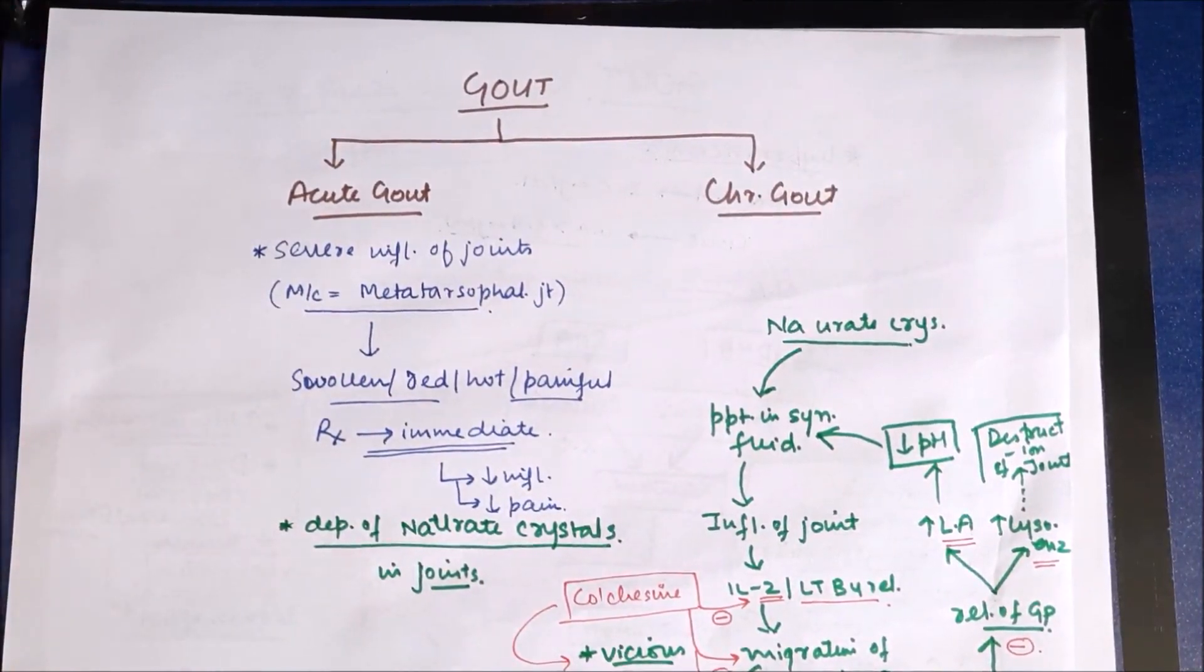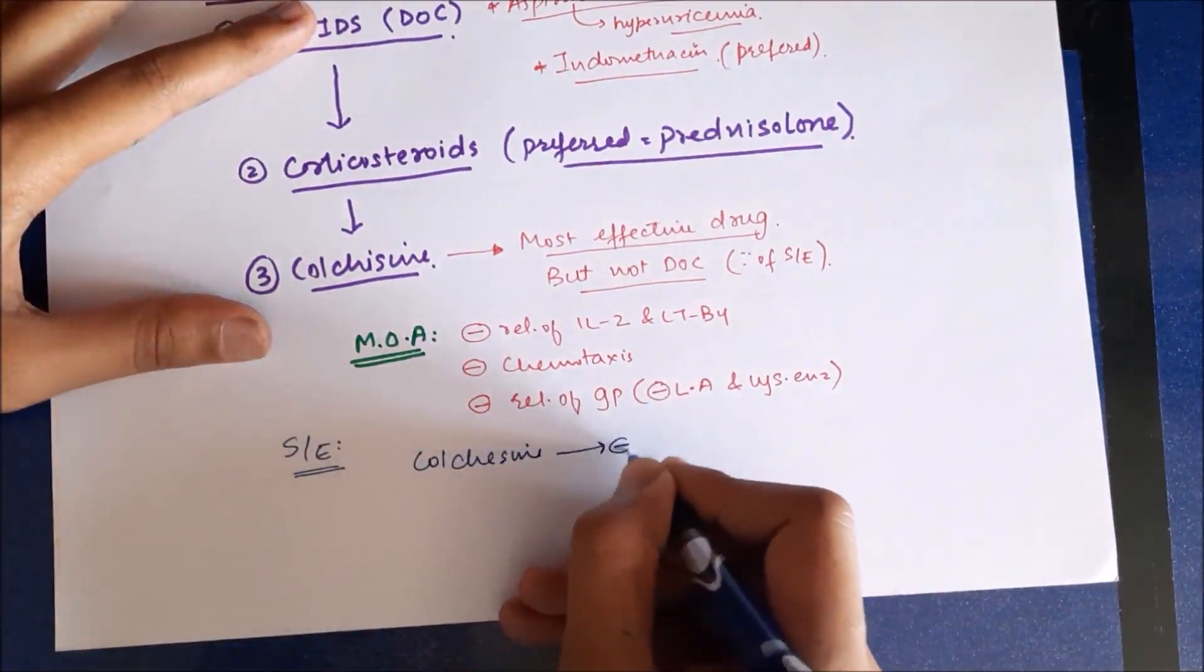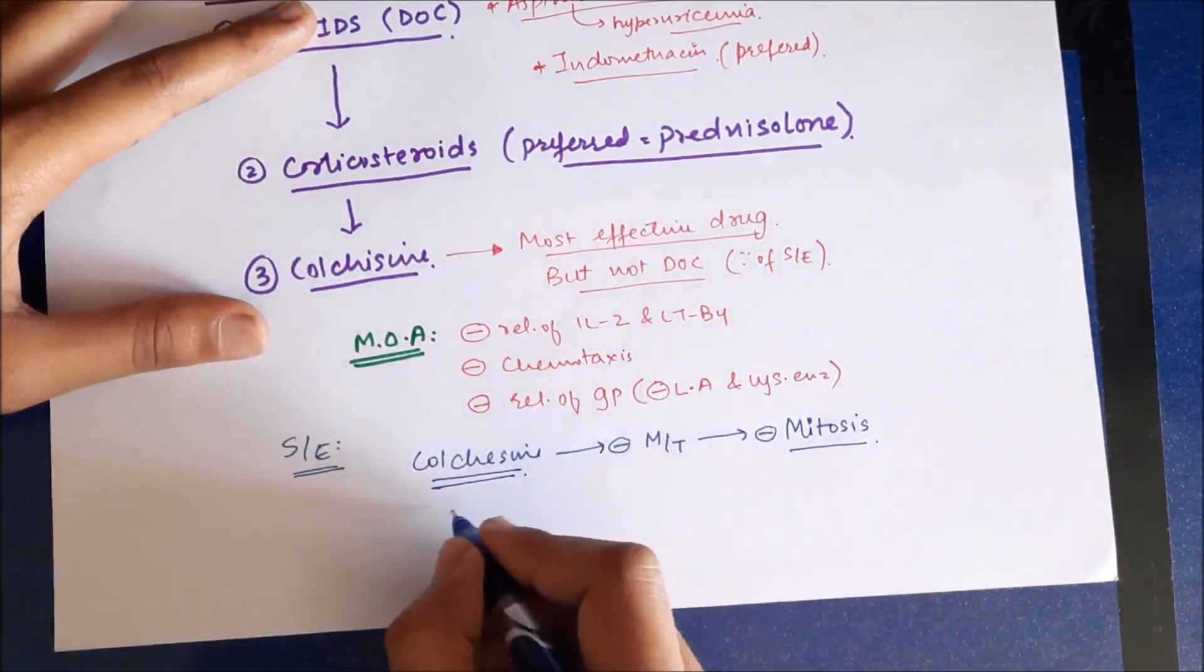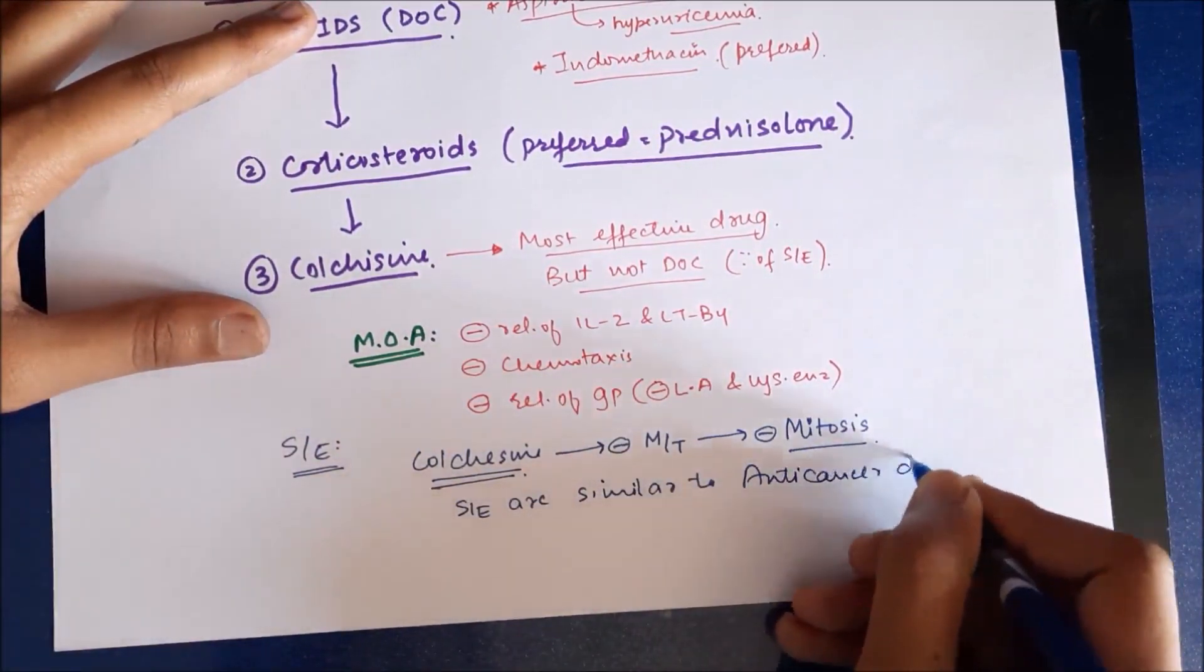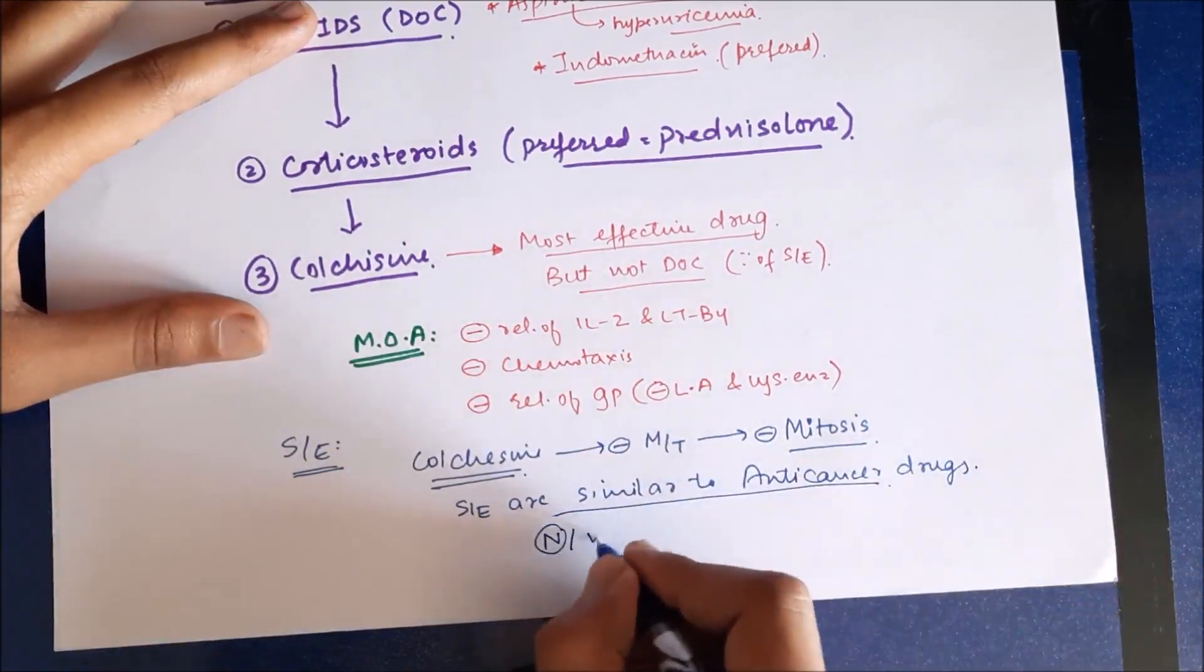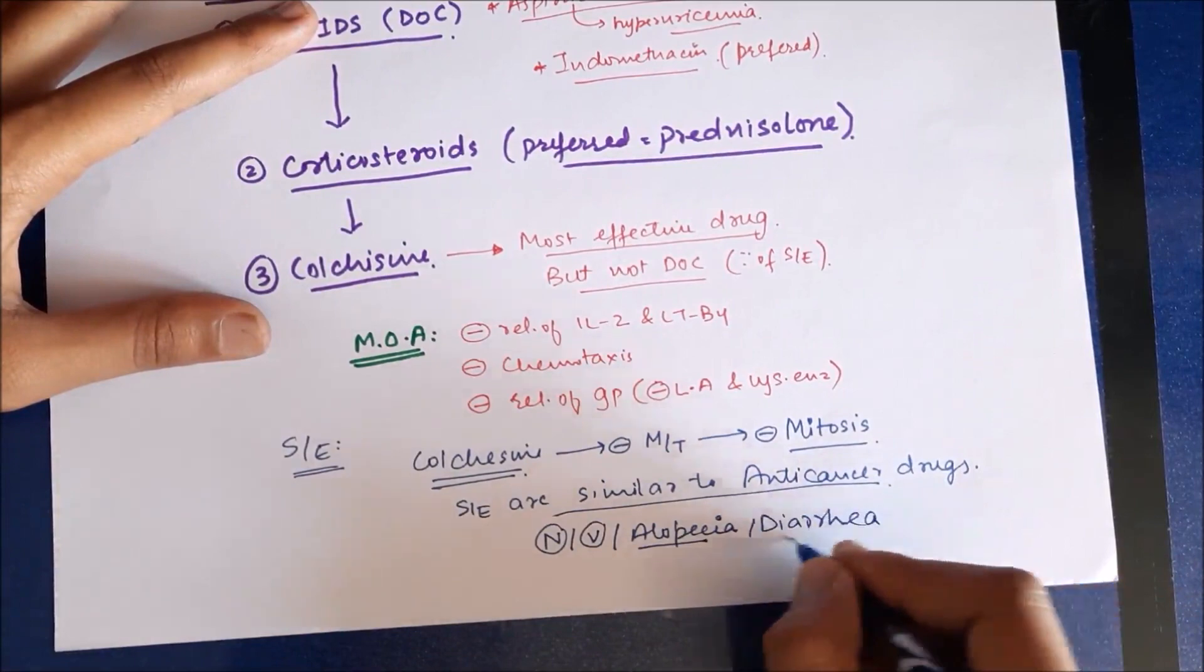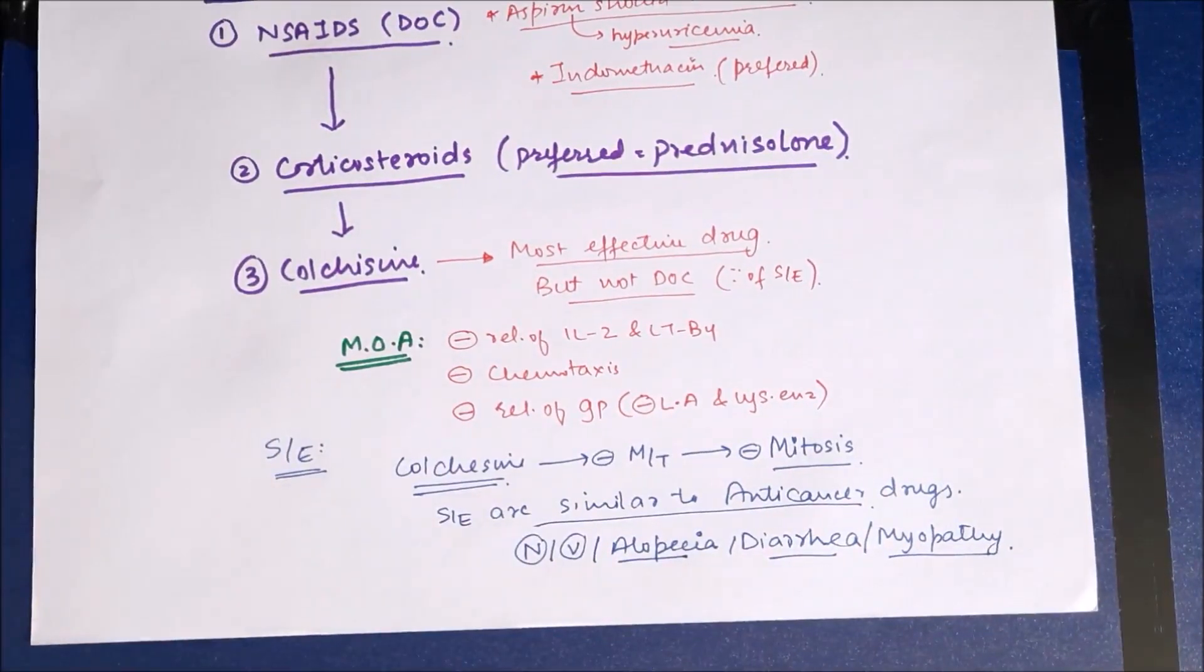Now side effects of colchicine: since colchicine inhibits microtubules and therefore inhibits mitosis, which is similar to anti-cancer drugs, side effects are also similar to anti-cancer drugs. These side effects include nausea, vomiting, alopecia, and diarrhea because of neural stimulation in GIT and myopathies.